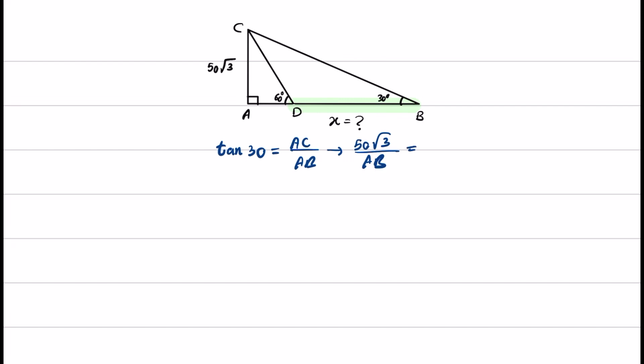If we replace the terms, we know that AC is 50 times square root of 3 divided by AB, which equals tangent 30, which is square root of 3 over 3. From here we can conclude that AB is equal to 150.